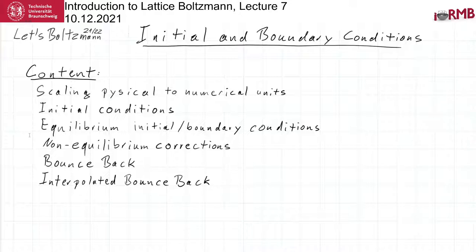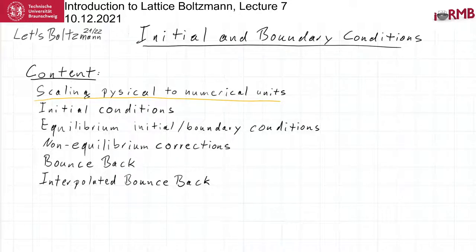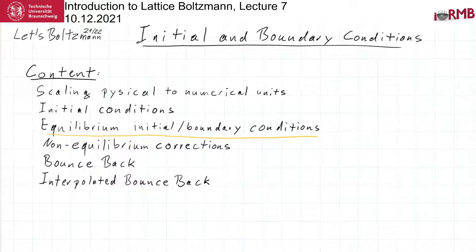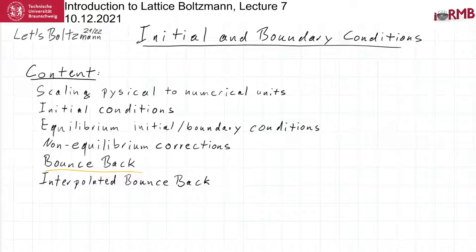Good morning! It is the 10th of December 2021. Welcome to the 7th lecture in Lattice-Boltzmann methods. Today we are talking about practical things that you also need for your project: initial and boundary conditions. We start with the rescaling of numerical units, then initial conditions, equilibrium initial conditions, non-equilibrium corrections, the bounce-back rule, and interpolated bounce-back rules for geometrically complex boundaries.